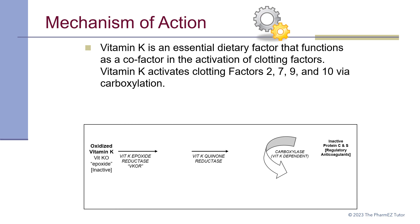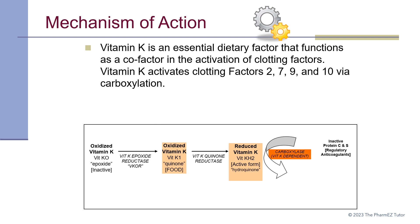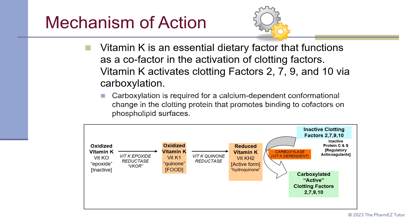First, oxidized vitamin K, or vitamin K epoxide, is converted by the enzyme vitamin K epoxide reductase, or VKOR, to vitamin K1. Vitamin K1 is then converted by the quinone reductase enzyme to reduced vitamin K, or vitamin KH2, which is the active form of vitamin K. The carboxylase enzyme then uses this active form to convert inactive clotting factors 2, 7, 9, and 10 to the active carboxylated clotting factors. Carboxylation is required for a calcium-dependent conformational change in the clotting protein that promotes binding to cofactors on the phospholipid surfaces.